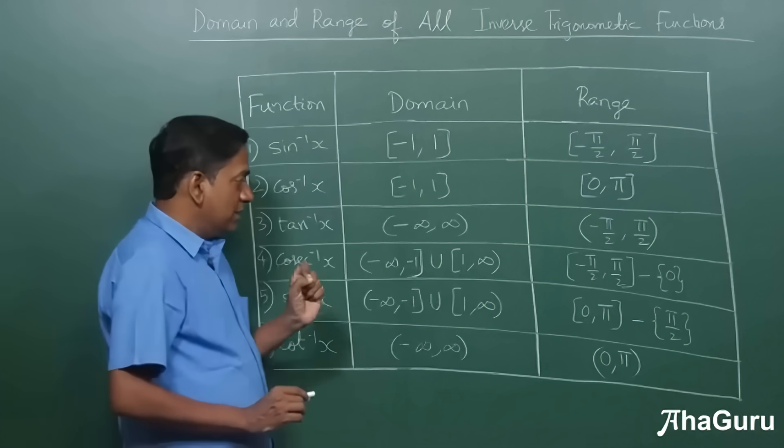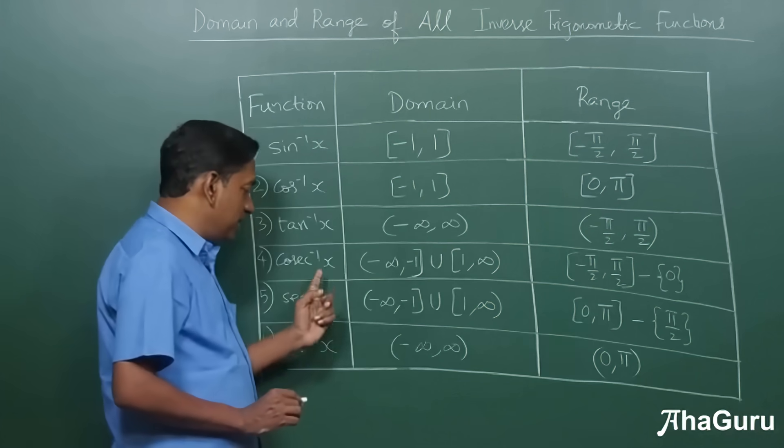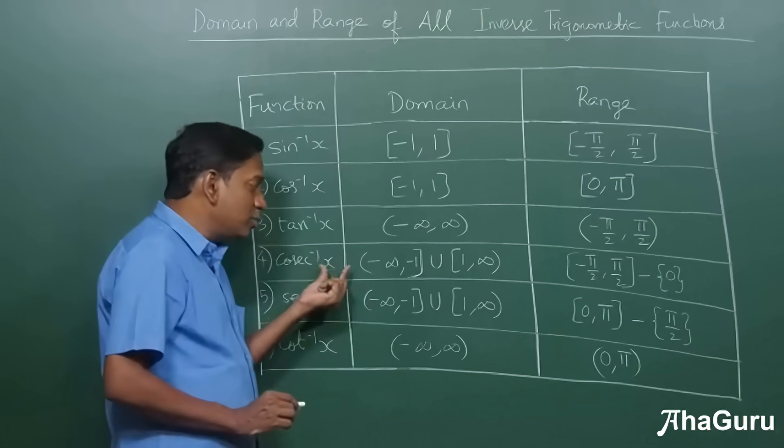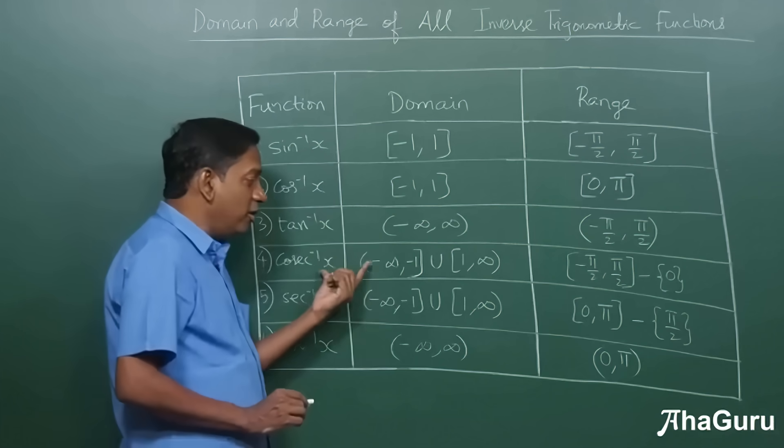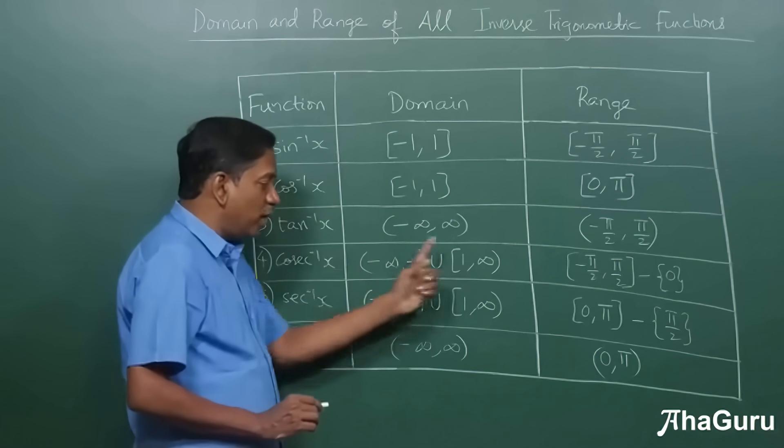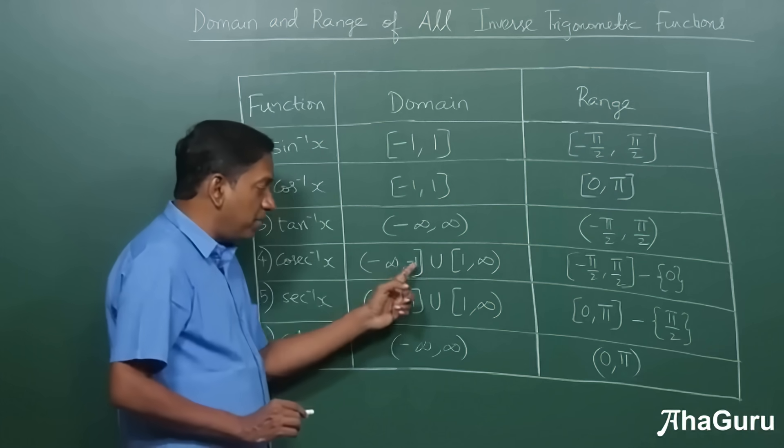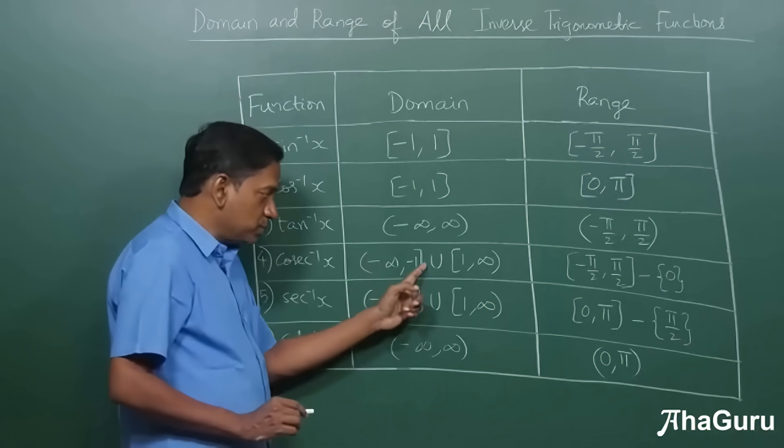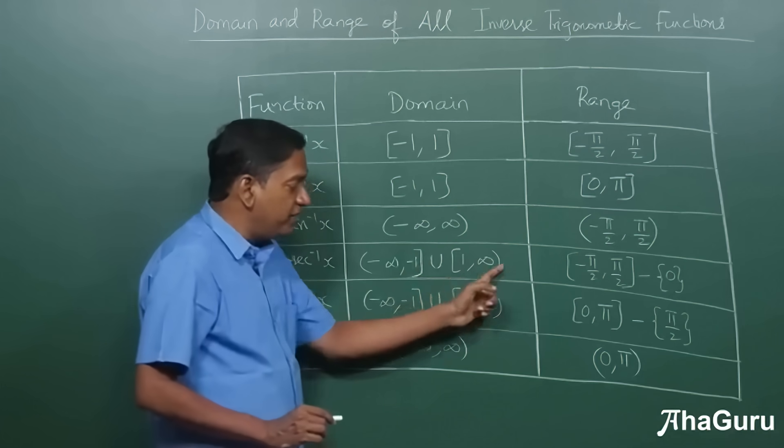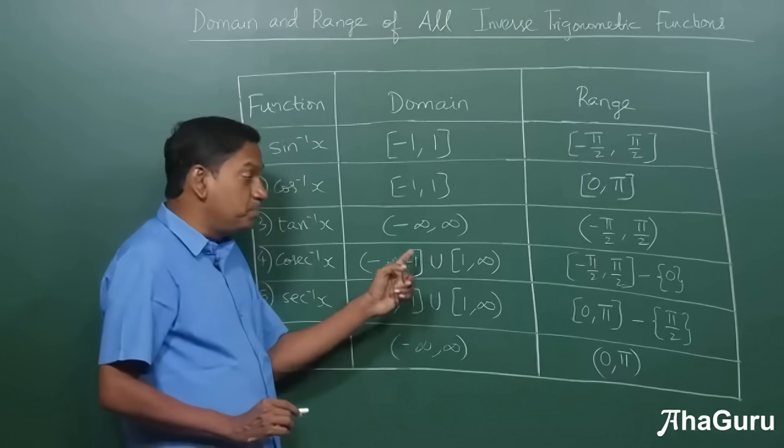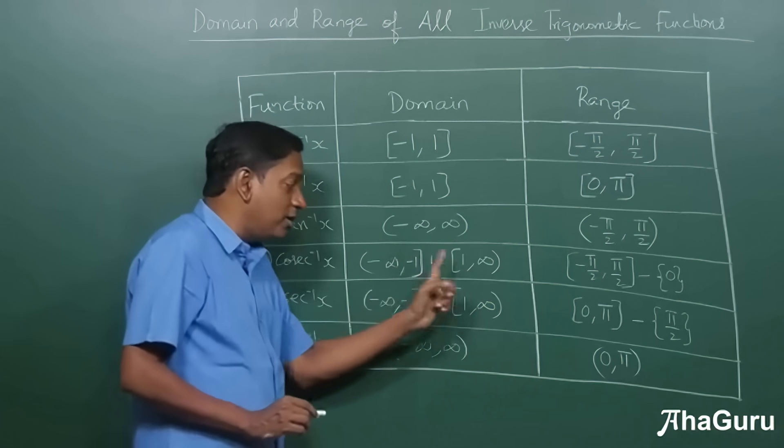Now the tricky part is cosecant inverse and secant inverse, where the x value has to be such that its modulus is greater than or equal to one, which is what we have written differently as minus infinity comma minus one, minus one alone is included, union one comma infinity, one is included here. That means all values between minus one to one are not allowed.